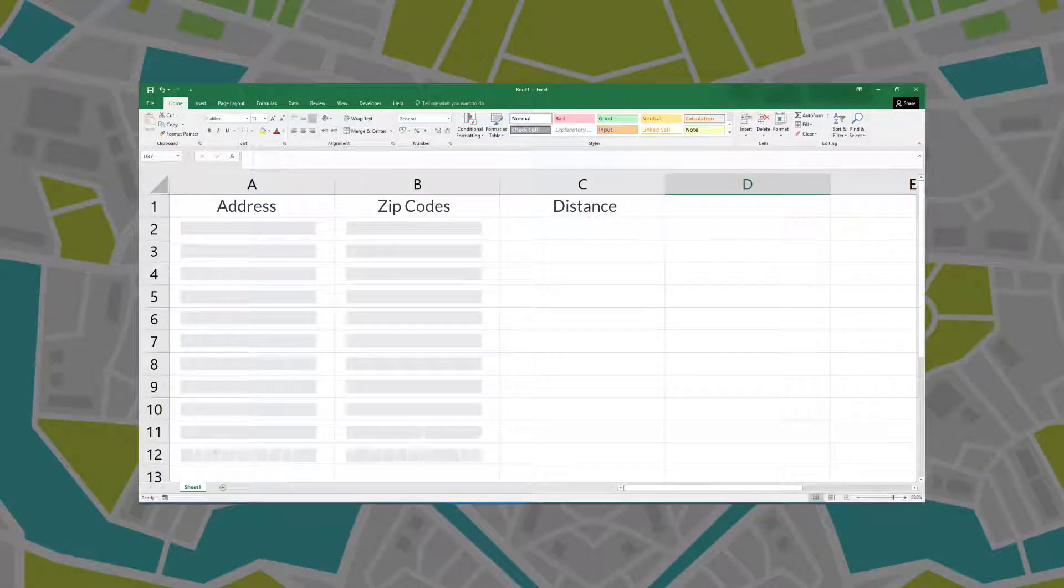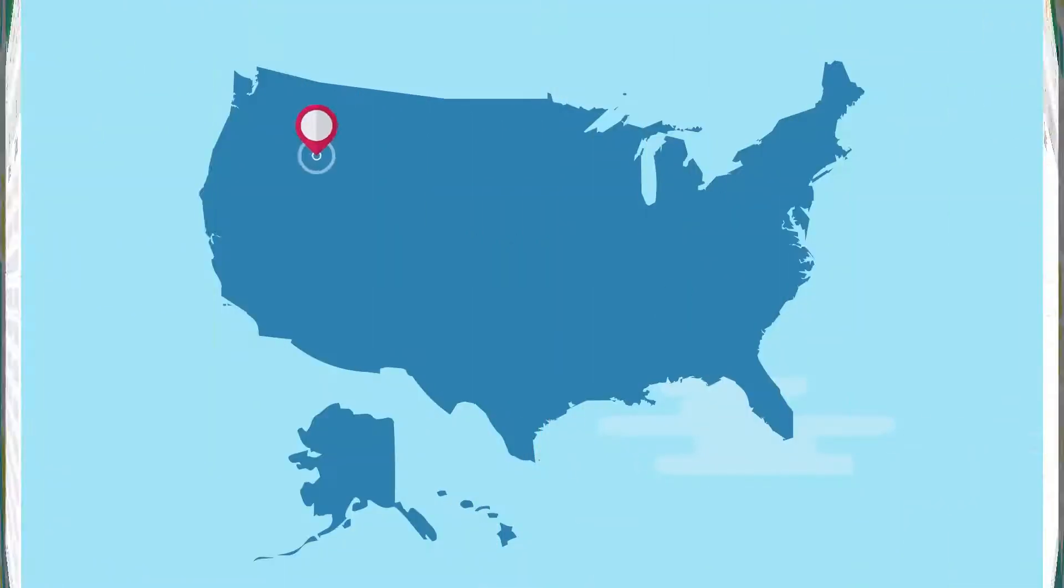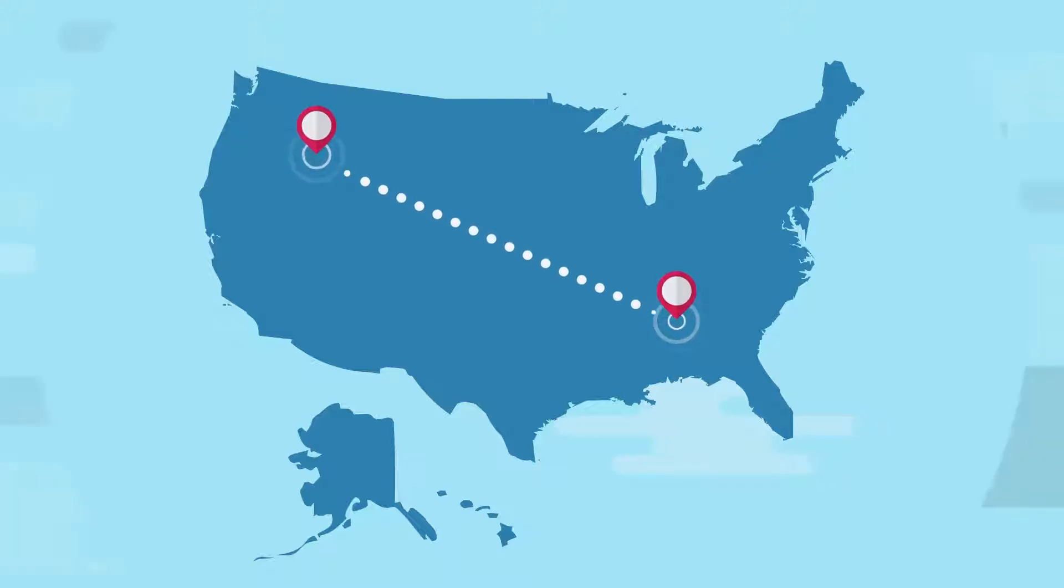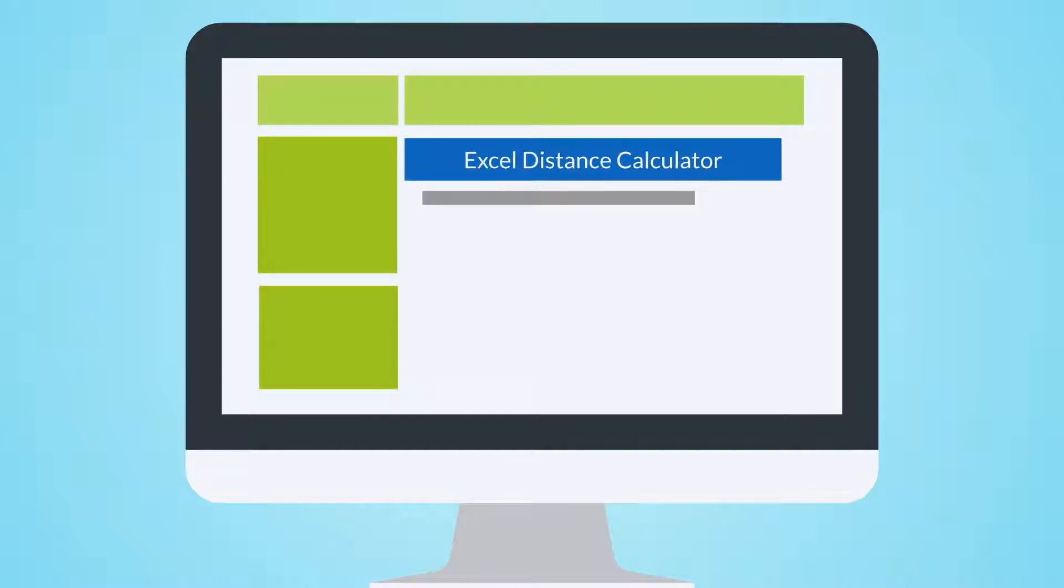So you have a list of address or zip code combinations and you would like to calculate distances between them? How do you do it fast? How do you do it without breaking the bank? How do you do it without having to install new software and tools in your computer?